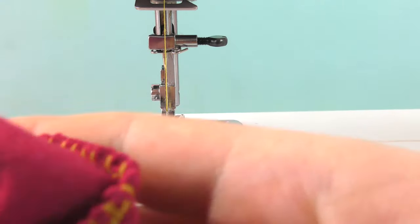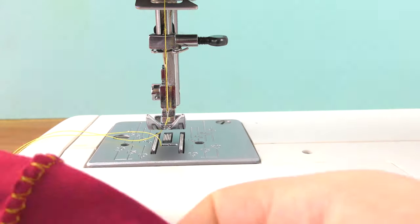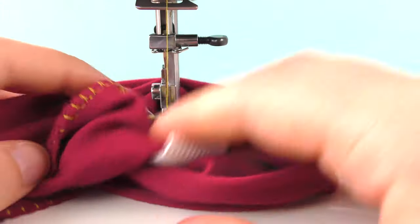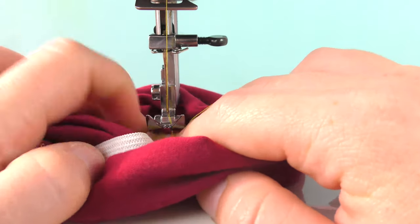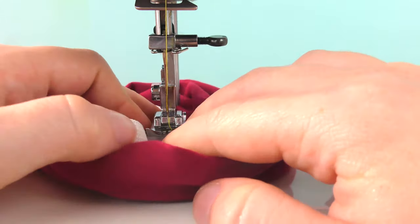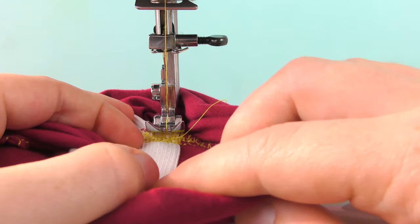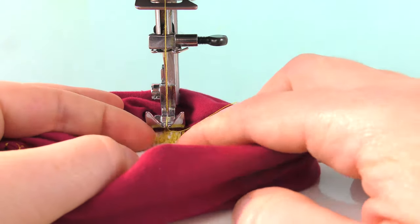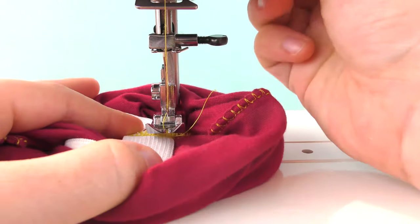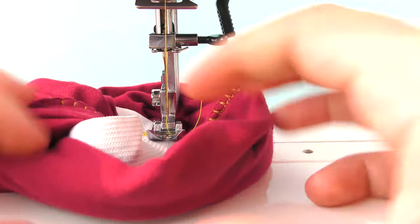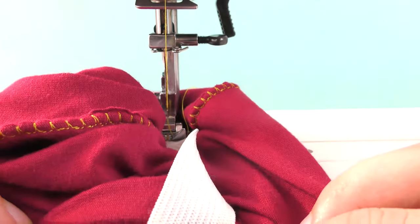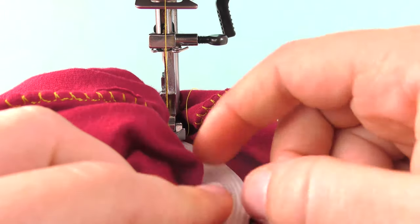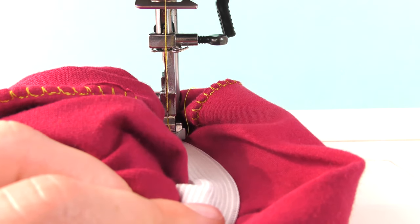So I'm using a straight stitch now and I'll simply go over the band from the inside. Once on the top and once on the bottom, just make sure that you don't pull or wrinkle the band so that you get a neat result. You can pin it if you want to make sure it stays in place.